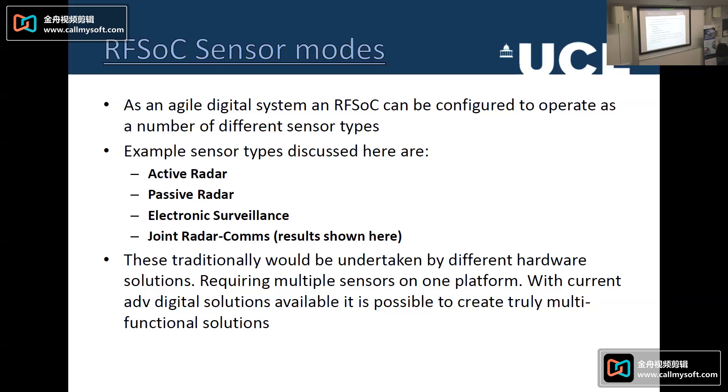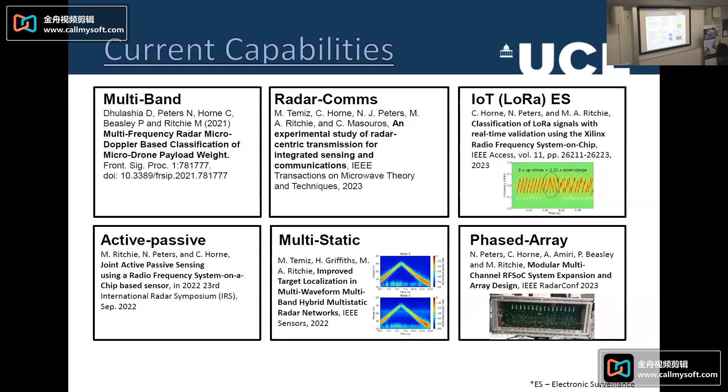And then the topic we're talking about today, which is joint radar communications. Traditionally, all of those different tasks would be undertaken by different hardware solutions requiring multiple sensors on one platform. But with current advanced solutions, it's possible to try and fuse that into a single device. Some of the research that we've looked at with the system with experimental research includes multiband classification of drones using this hardware where we classified the payload on a drone using the micro-Doppler signatures at S, C and W band. We have a radar communications paper, myself and Christoph, with Murat Tamiz and others, on experimental study.